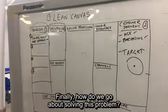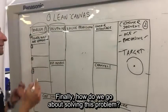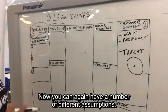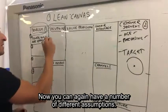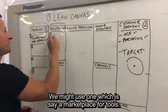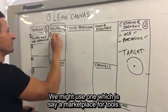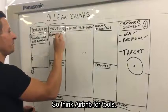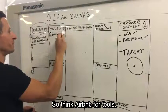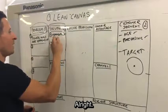Finally, how do we go about solving this problem? You can have a number of different assumptions. We might use one which is a marketplace for tools — so think Airbnb for tools.